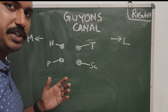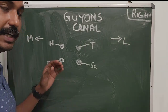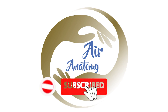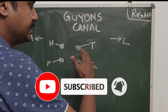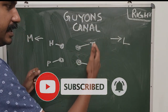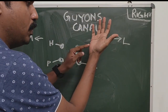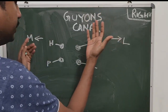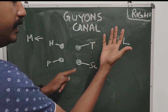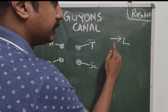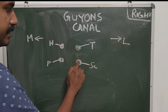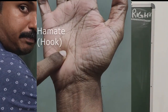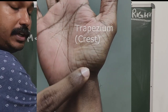Hello everyone, today we are going to learn about the Guyon's canal. This is the right wrist. I'm going to show the bones in the right wrist. This is the medial aspect shown here, this is the lateral aspect, and this is the thumb side shown here. These are the four bony points that you can palpate on the wrist.